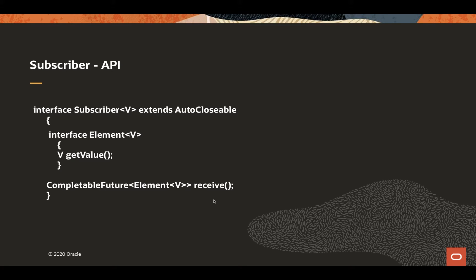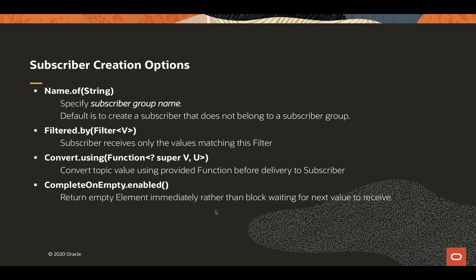The subscriber API provides one method to asynchronously receive a CompletableFuture that returns back an element wrapper containing the value published by a publisher. The key subscriber creation option is nameOf. If you create a subscriber with the nameOf option, that specifies that it's a subscriber group member and which subscriber group it's joining. Additionally, there's filteredBy and convertUsing — subscriber options that enable limiting transmission and only receiving the data the subscriber is interested in.